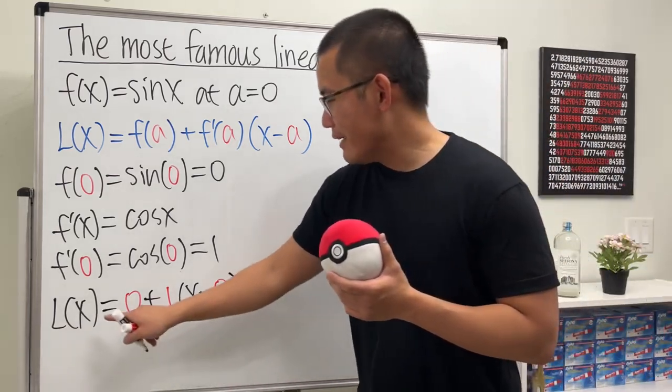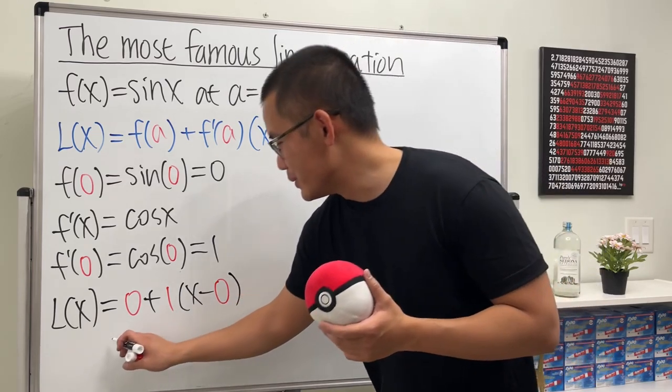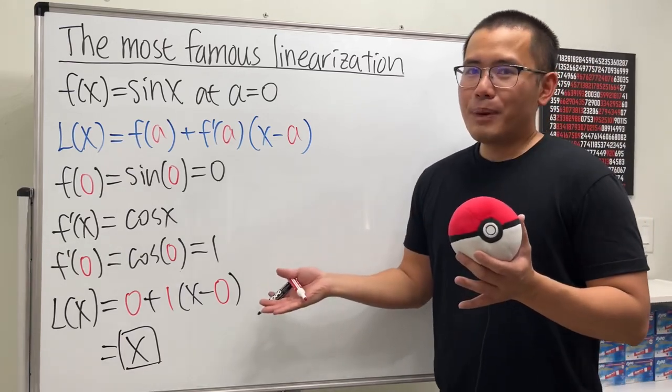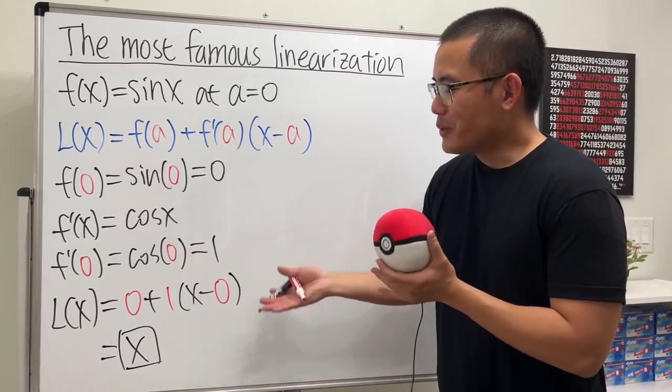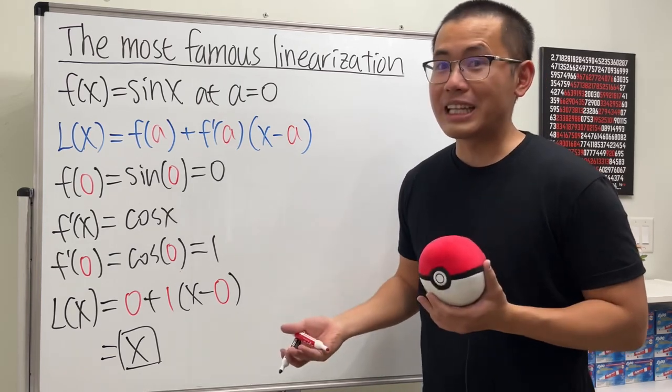So as you can see, after we work this out, L(x) is just going to be one times x, which is just equal to x. And that is it. I don't know about you guys, but this answer right here is a little bit too simple, so you might not feel too satisfied.